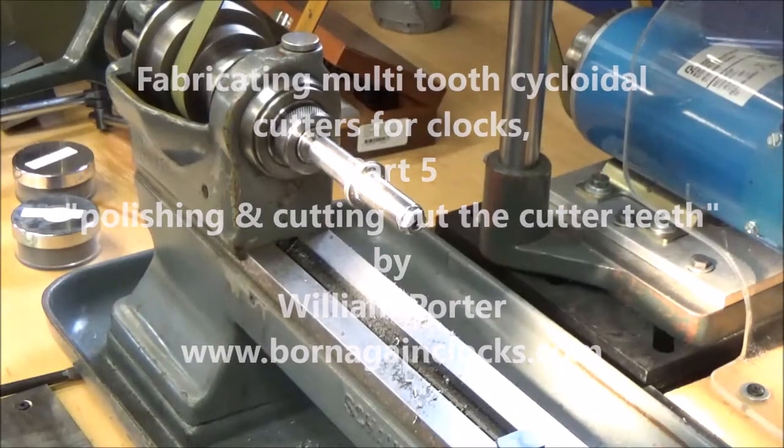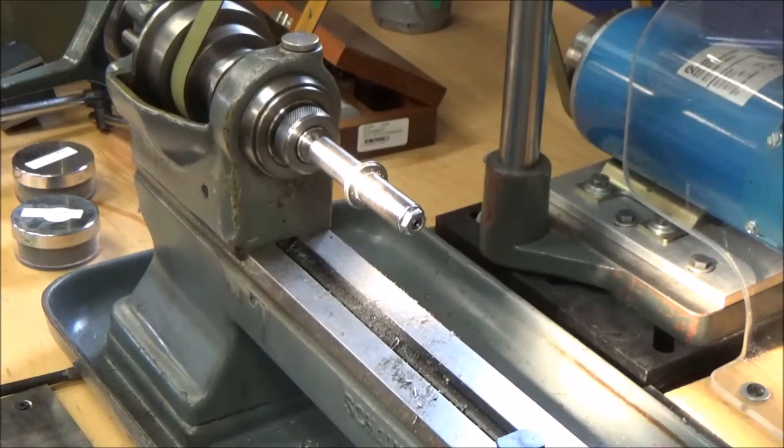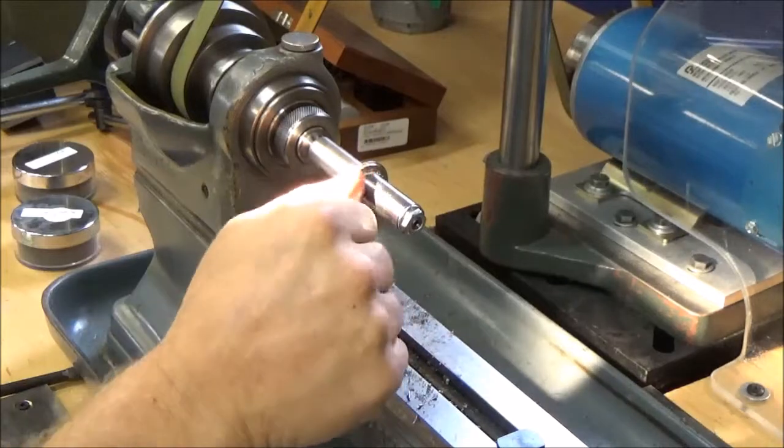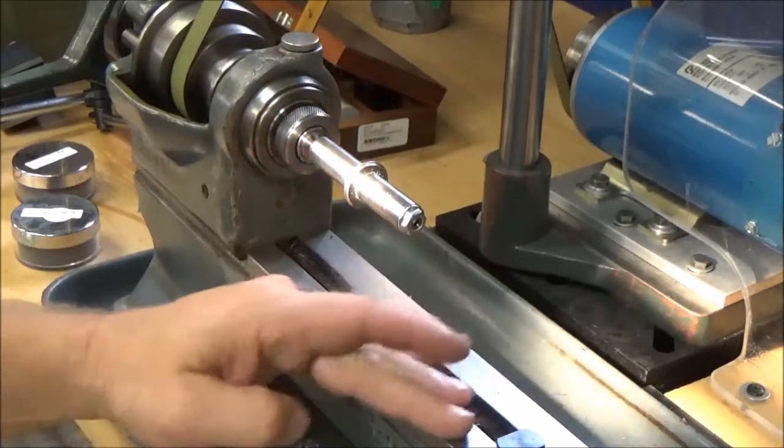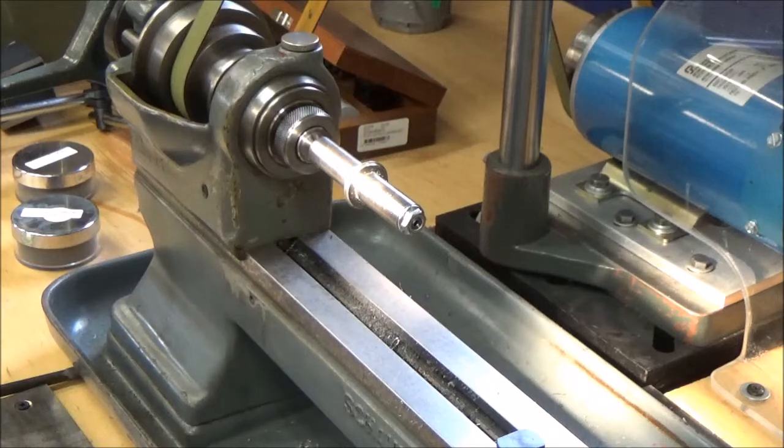We're going to do a little polishing on our blank before we cut the teeth. We want to get this smooth so we don't have any ridges in it or anything. The smoother the better. It will give a better finish on our final product.